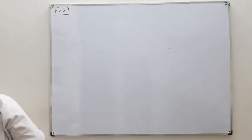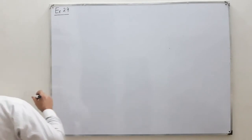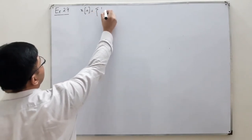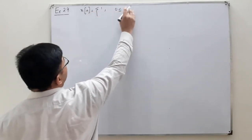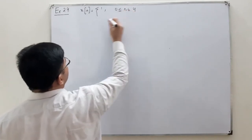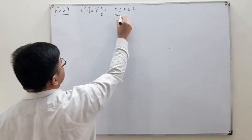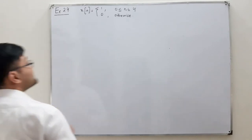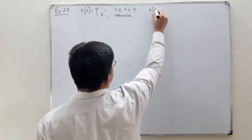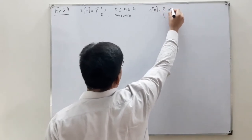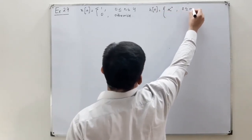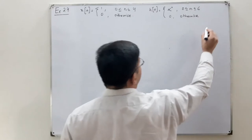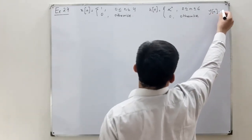x[n] is given as 1 when n is between 0 and 4, and 0 otherwise. Similarly, the impulse response h[n] is equal to alpha to the power n when n is between 0 and 6, and 0 otherwise. What we are asked to find is y[n], which is unknown.